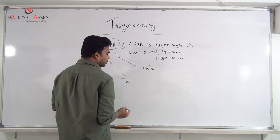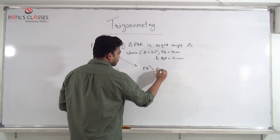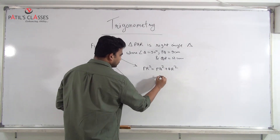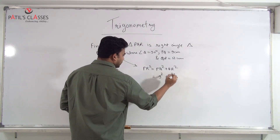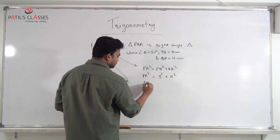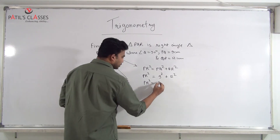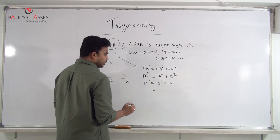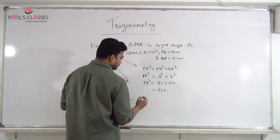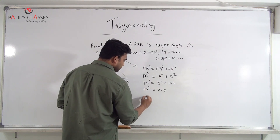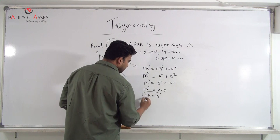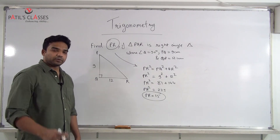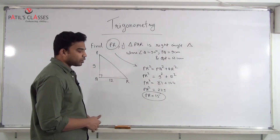By Pythagoras theorem: PR² = PQ² + QR² = 9² + 12² = 81 + 144 = 225. Therefore PR² = 225, so PR = 15. I hope you were able to do that on your own.